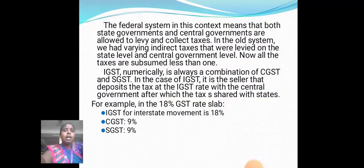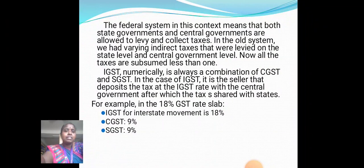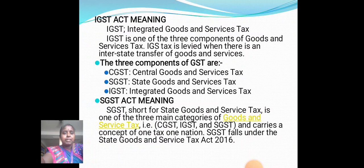Now, all the taxes are subsumed under one. IGST numerically is always a combination of CGST and SGST. In the case of IGST, it is the seller that deposits the IGST tax with the central government, after which the tax is shared with the states. For example, for interstate movement, IGST is 18%, CGST 9%, and SGST 9%. IGST, or Integrated Goods and Service Tax, is one of the three components of Goods and Services Tax, levied when there is an interstate transfer of goods and services.